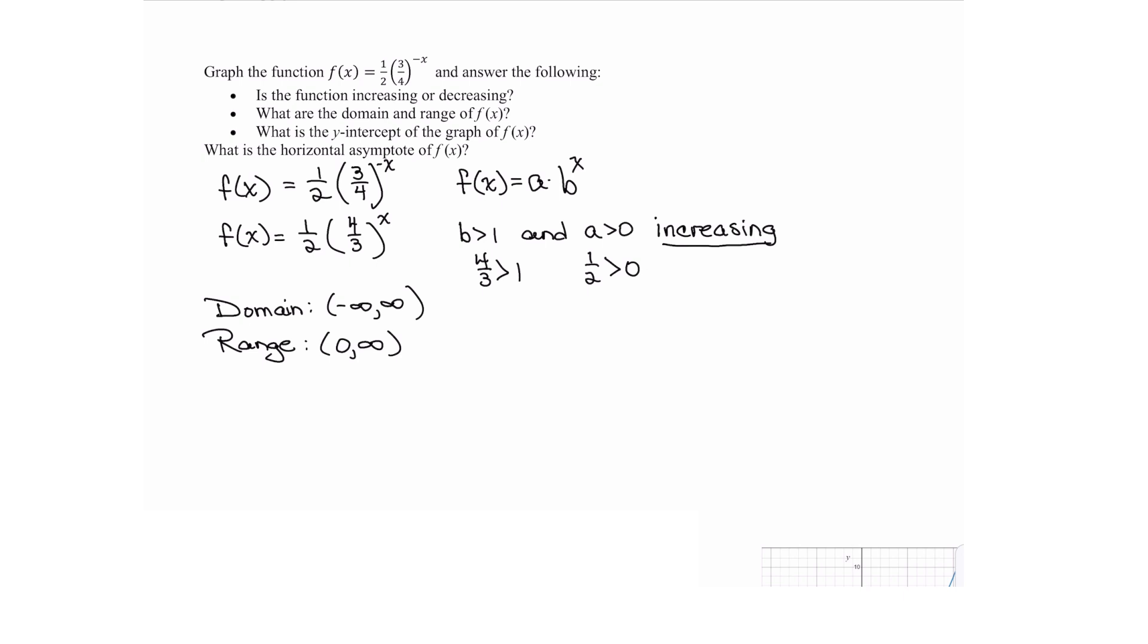What is the y-intercept? Well for the y-intercept of any function you set x equal to 0 and find the y coordinate and then get your ordered pair. So then this gives me f(0) is equal to, and we're going to use this form of it, one-half times four-thirds to the 0 power. Well any non-zero number to the 0 power is 1 and one-half times 1 is one-half. So my y-intercept is an x-coordinate of 0 and a y-coordinate of one-half and this also verifies that my y comes out to be a positive number there.